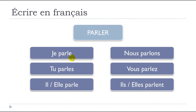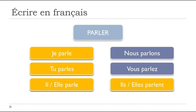Now if you look carefully, you write the endings differently: E for 'je parle,' E-S for 'tu parles,' and E-N-T for 'ils/elles parlent.' But if you listen, I pronounce them all the same: 'je parle,' 'tu parles,' 'il parle,' 'elle parle' — identical sound. This is basically the difficult thing about French: there's a big difference between what you pronounce and what you write.